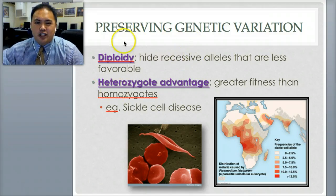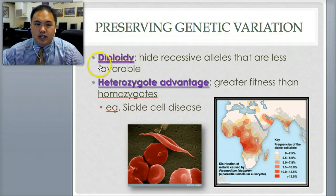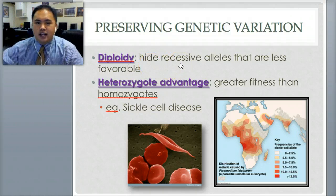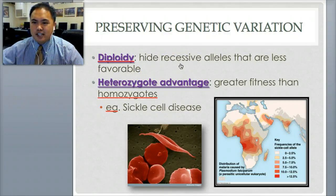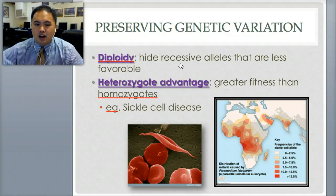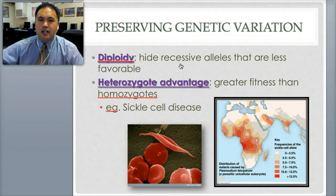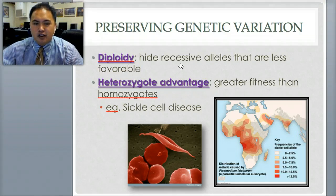Preserving genetic variation: something called diploidy hides recessive alleles that are less favorable. You can have a recessive gene and it tends to be hidden. For example, someone could carry a recessive gene for red eyes without expressing it. When recessive alleles are hidden and less favorable, that's called diploidy.